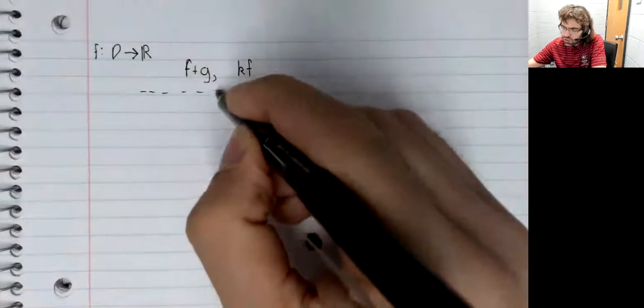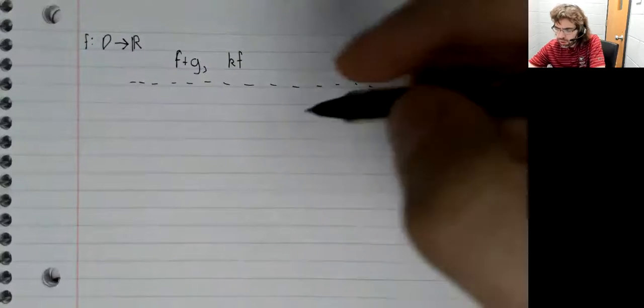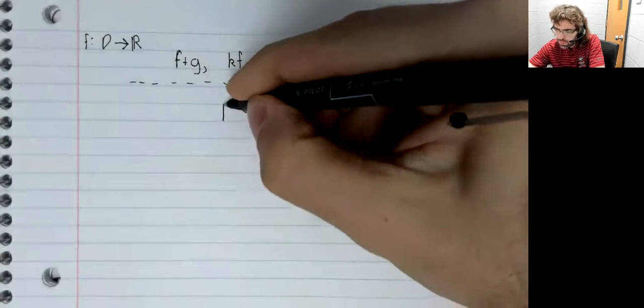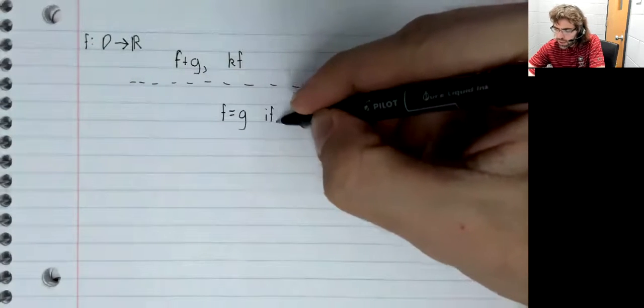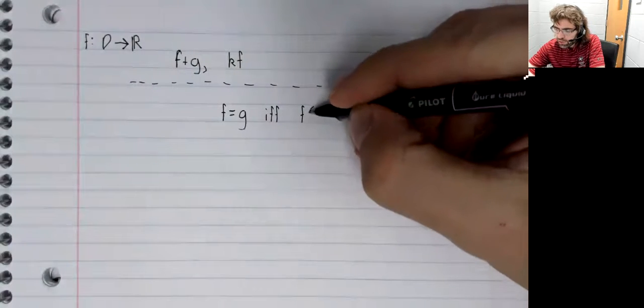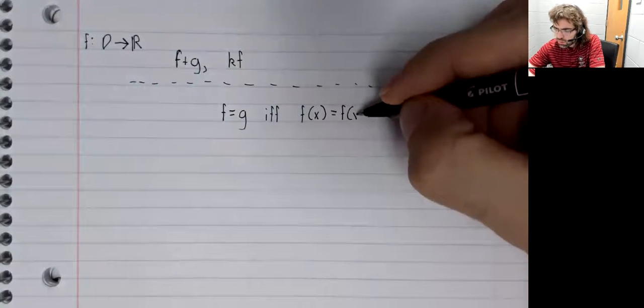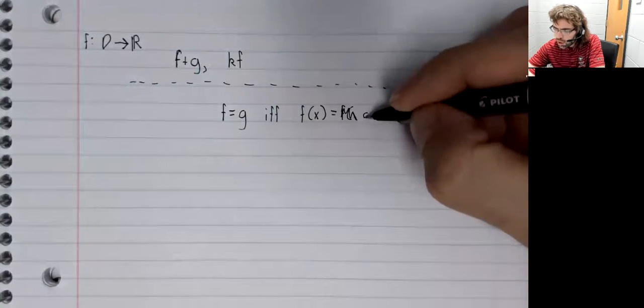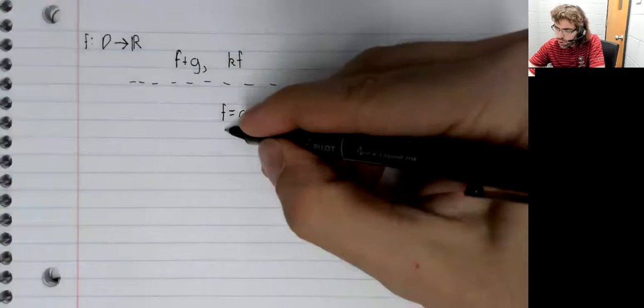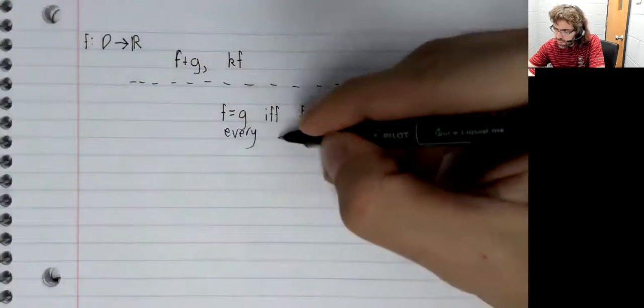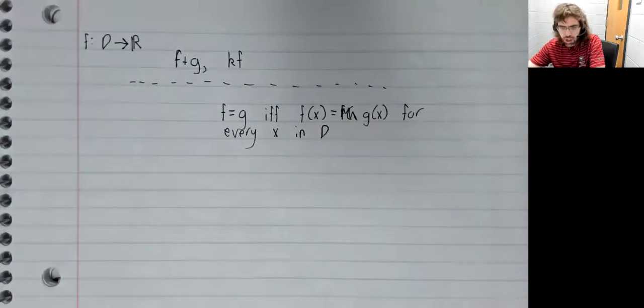We're going to use the same trick over and over in this proof. Two functions are equal if and only if their outputs are equal for every input in the domain.